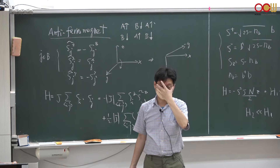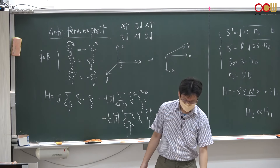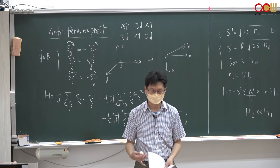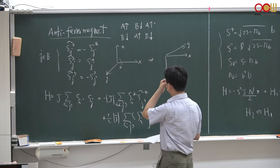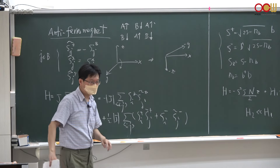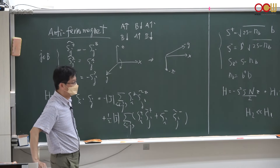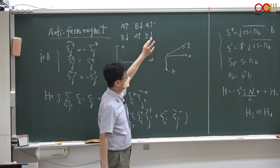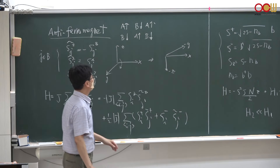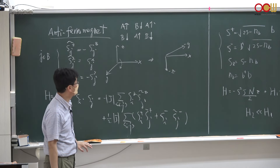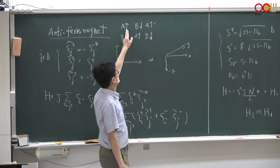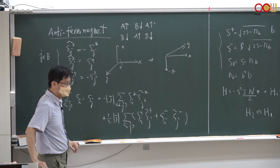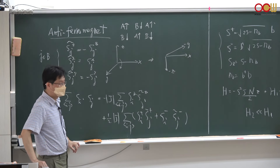Last time, we started to look at the spin-wave theory for quantum antiferromagnets. As we already noticed, this antiferromagnet shows a sublattice structure, meaning all sublattice A are spin-up states while all sublattice B show spin-down states, or vice versa. So you get this up, down, up, down, up, down alternating pattern of spin orientations for antiferromagnets.